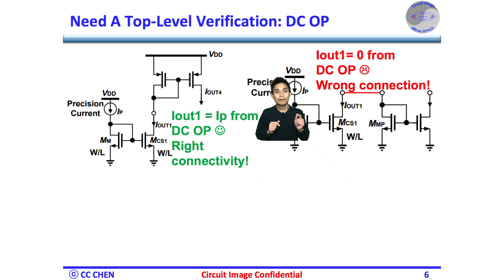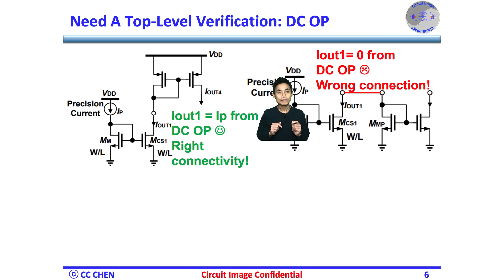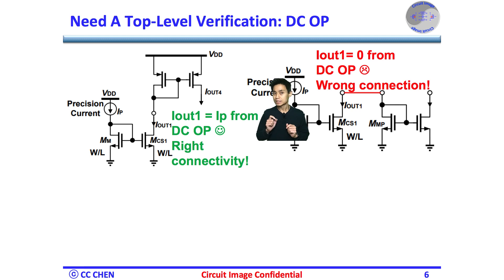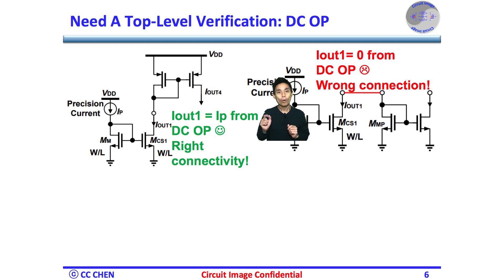We know verifying the DC operating point in a small block is easy and a must. It might be also doable even for the entire SOC chip. So, a simple DC operating point in SPICE might easily catch an inversion mistake. Unfortunately, it's still difficult to catch errors such as any clock inversion or swapped data stream in the digital domain.